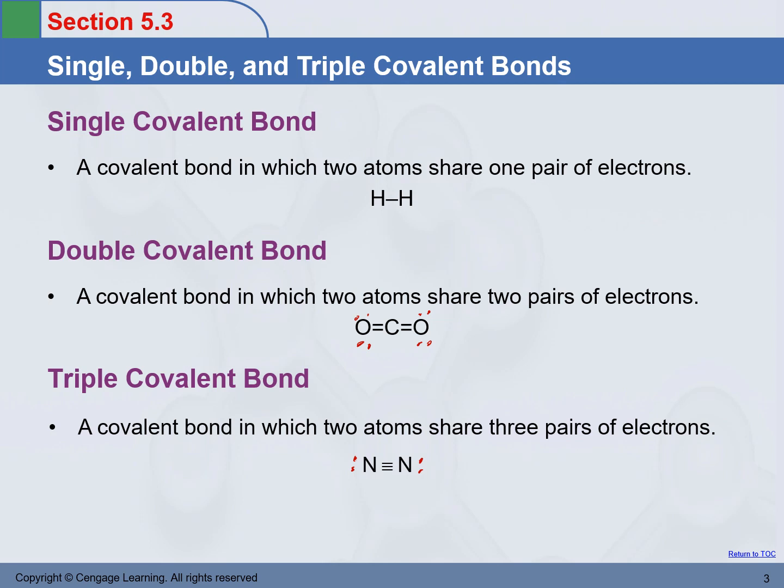By the way, when you write the Lewis structures of molecular compounds, lone pairs are not required to be shown. So it is absolutely correct if you do not draw the lone pair in the Lewis structure. However, for us as beginners in this class, let's make it a habit that we always include lone pairs so that we can keep track of the number of electrons. That will help you a lot.